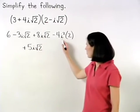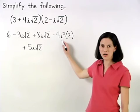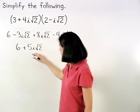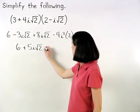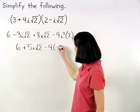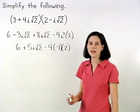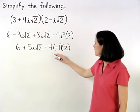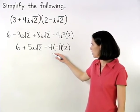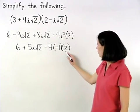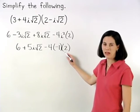And remember that i squared is negative 1. So we have 6 plus 5i root 2 minus 4 times negative 1 times 2. Simplifying in our last term, negative 4 times negative 1 is positive 4, and positive 4 times 2 is positive 8.